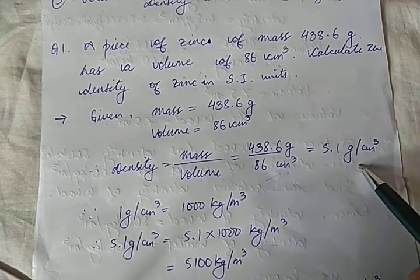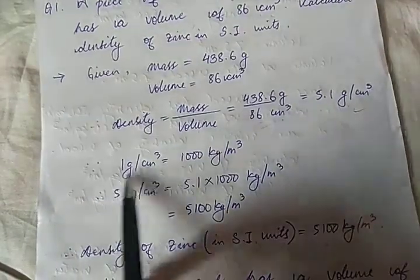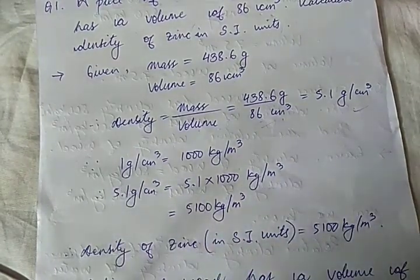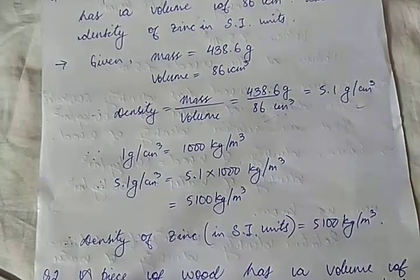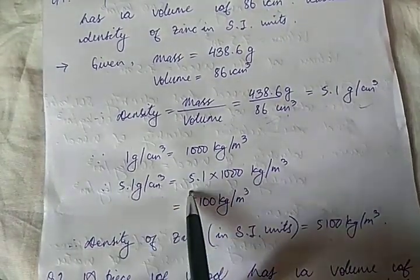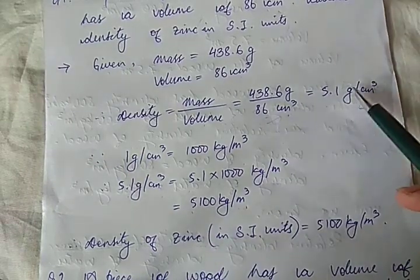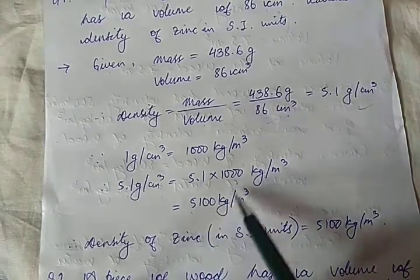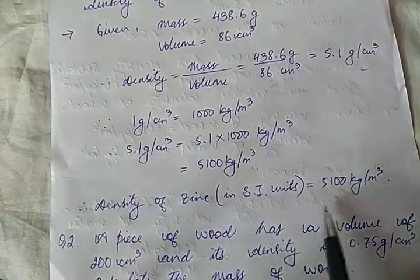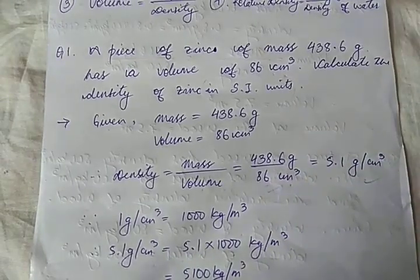Since the question specifically says find the density in SI units, we use the conversion: 1 gram per centimeter cube equals 1000 kilogram per meter cube. Therefore, 5.1 g/cm³ equals 5.1 × 1000 = 5100 kg/m³. Kilogram per meter cube is the SI unit of density, so the density of zinc in SI units is 5100 kg/m³.